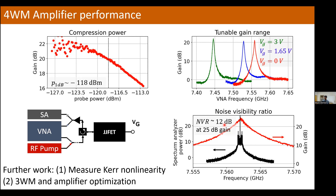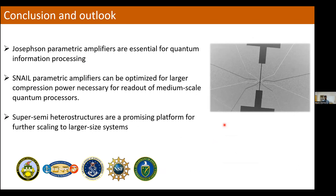Further work along these lines is to really characterize the quartic nonlinearity in these devices and show whether it's indeed smaller than in aluminum-oxide-based junctions, and also to study this paramp in the three-wave mixing mode and then characterize and optimize for all the various properties. To conclude: I hope I've given you a sense of what JPAs are and how they are useful for quantum information processing, talked about the SNAIL paramp and how we optimized it for compression power, how we're studying squeezing coming out of these amplifiers, and in the last part, the super-semi heterostructure-based amplifiers.